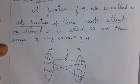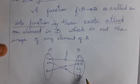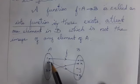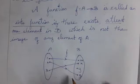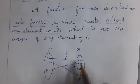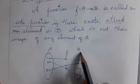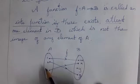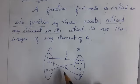See the example. 1, 2, 3 are the elements of A. W, x, y, z are the elements of B. See the function: 1 maps to w, 2 maps to z, 3 maps to x. Here, you have element y in B which does not have a pre-image in A. Therefore, it is an into function.